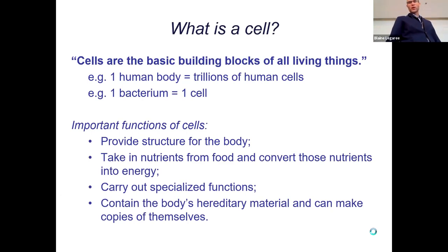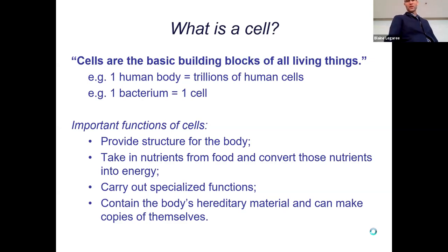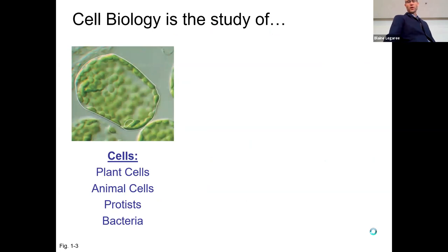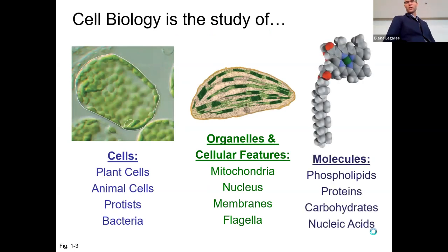What are these functions we're talking about? You've got structure — cells in your body providing bone, cartilage, and connective tissue. You've got cells involved in metabolism, digestion and nutrients, and growth. All sorts of specialized functions like red blood cells. And of course cells have our DNA hereditary material. In this course we're going to be talking about lots of types of cells: plant cells, animal cells, bacteria — eukaryotes and prokaryotes will be a big theme. We'll talk about organelles and molecules as well.